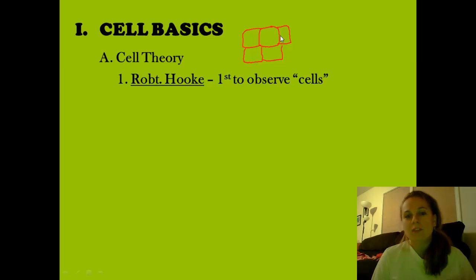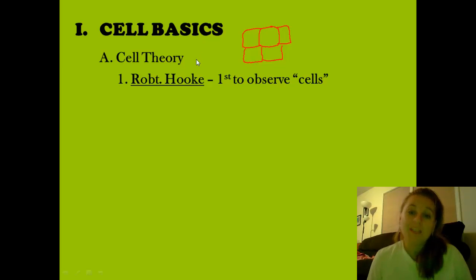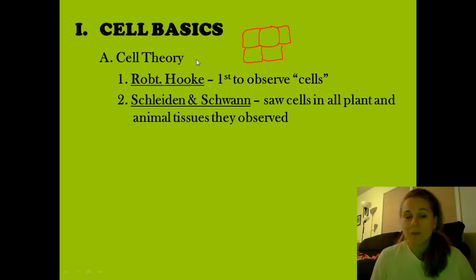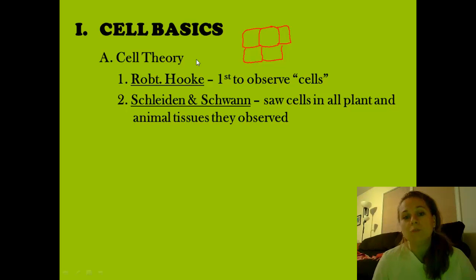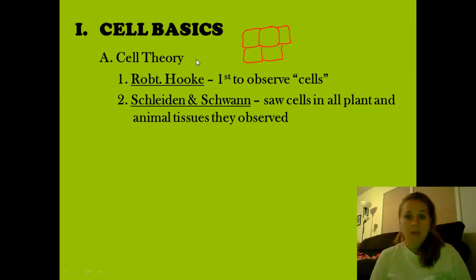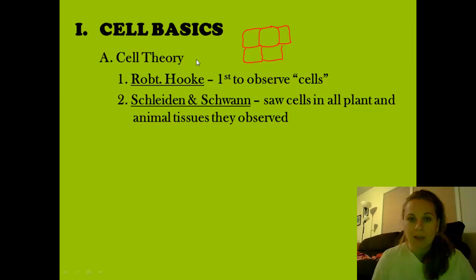Given that he was the first to observe cells, Hooke gave us the first piece of cell theory, which is that cells are the basic unit of life. A hundred or so years down the road, two gentlemen by the name of Schleiden and Schwann came along. They began looking at various life forms and noticed that every type of life they would section and observe under a microscope was also made of cells, giving us part two of the cell theory: all living things are made of cells.